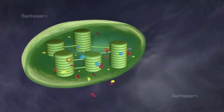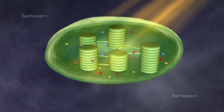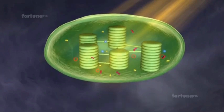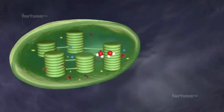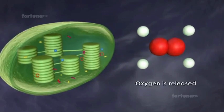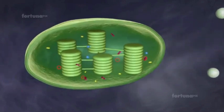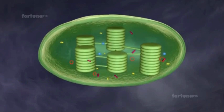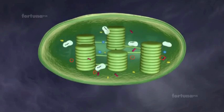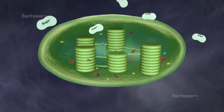The chloroplast is involved in both stages of photosynthesis. The light reaction takes place in the thylakoid discs; during this reaction water is oxidized and oxygen is released. The dark reaction occurs outside of the thylakoids in the stroma, where sugar molecules and other organic molecules necessary for cell function and metabolism are produced.